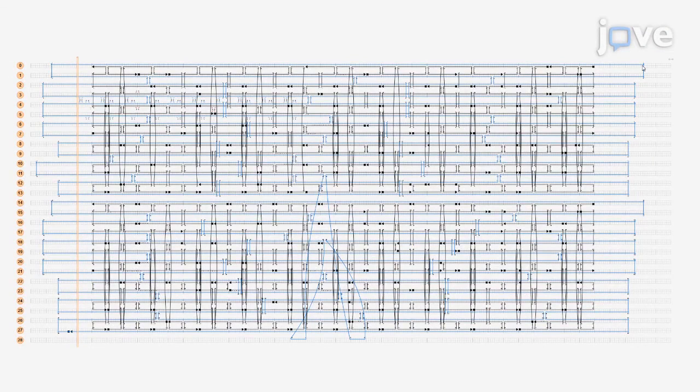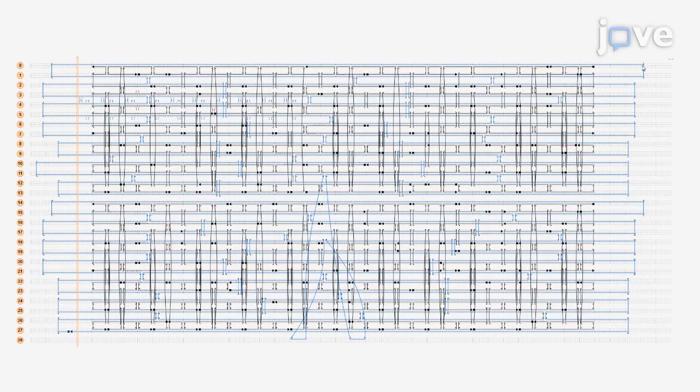Use CAD-nano to design a DNA origami template. Route the scaffold and staple strands according to the desired shape of the template. Then generate the staple strand sequences by clicking sequence tool.